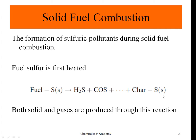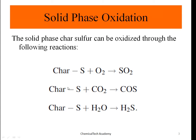For further solid phase oxidation, the char-S can be oxidized through the following reactions: char-S plus O2 can combine with CO2 or H2O to produce SO2. Char-S plus CO2 (carbon dioxide) produces COS, and with further oxidation that COS produces SO2 as well. Char-S plus water produces H2S (hydrogen sulfide), and hydrogen sulfide upon oxidation also produces SO2.